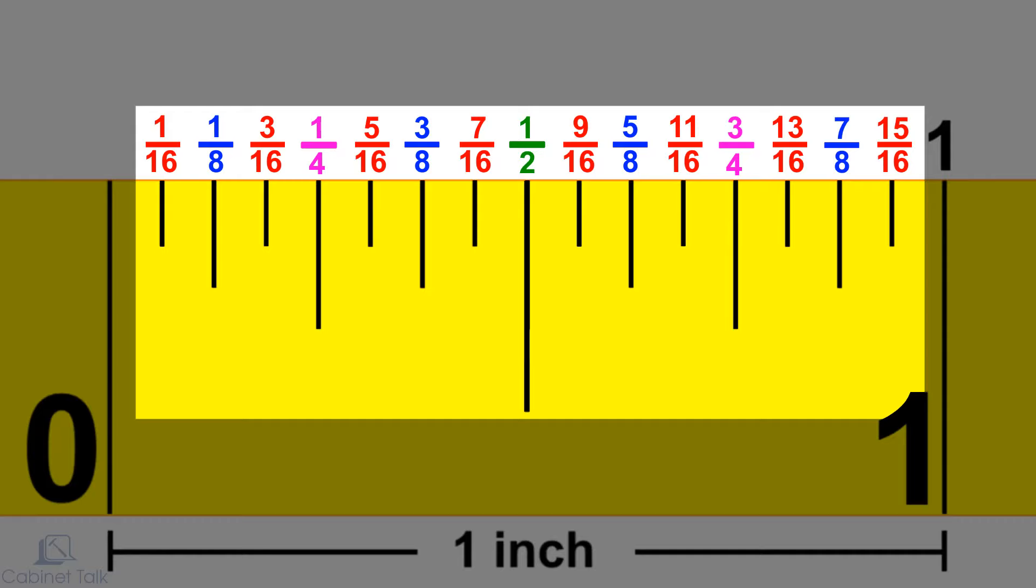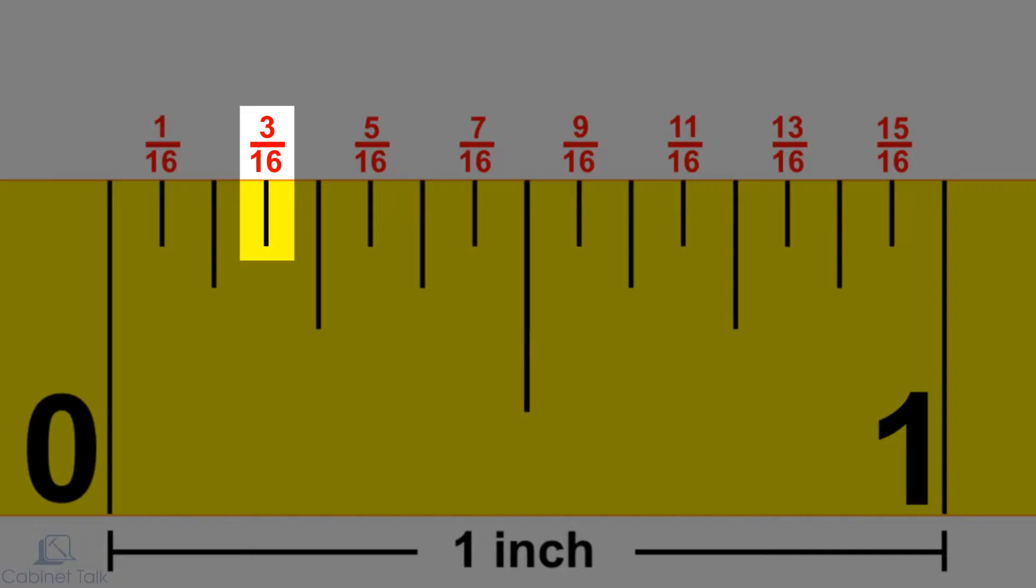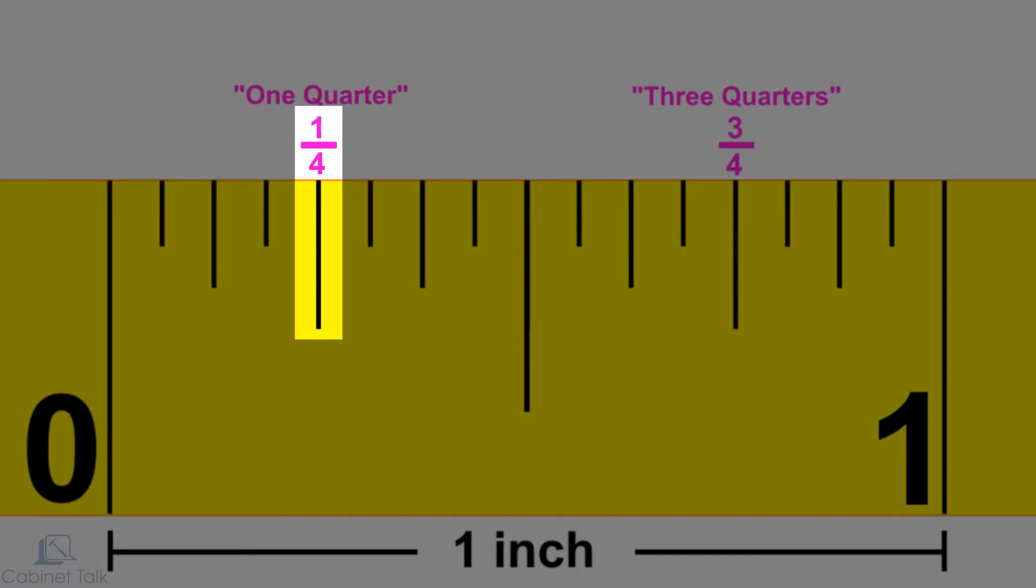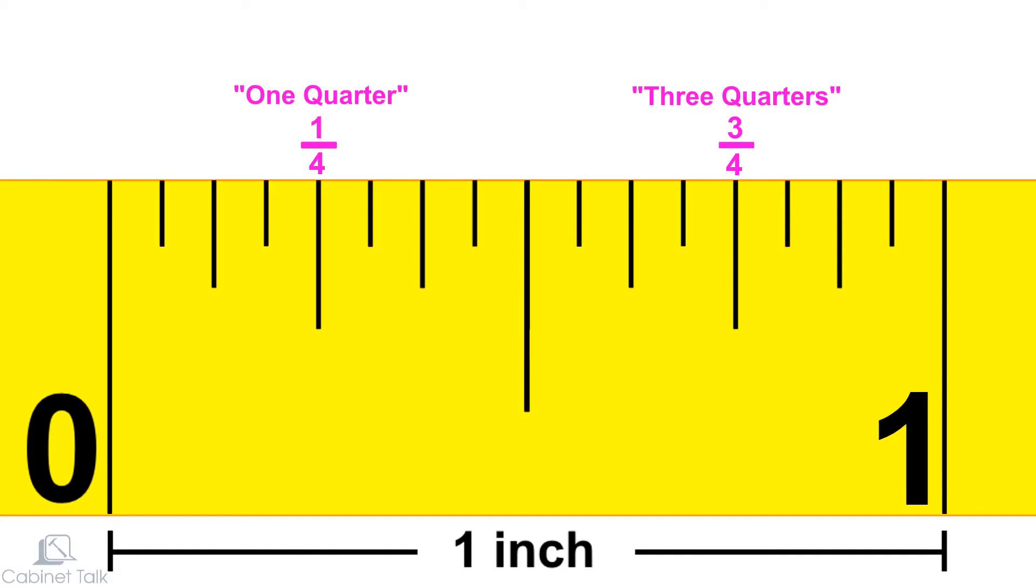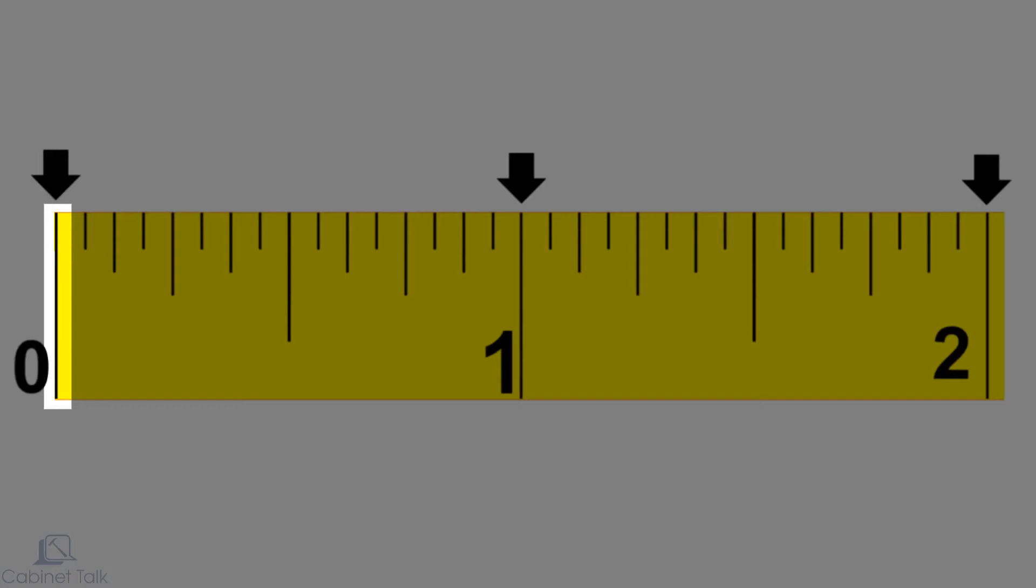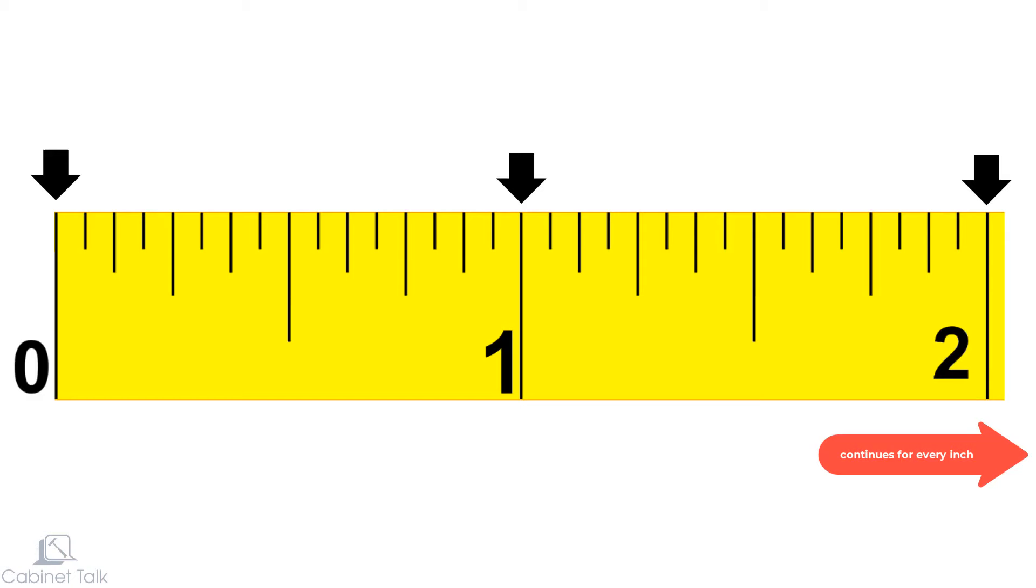If you look closely at the length of each mark, you'll see some helpful patterns. Notice that the sixteenth inch marks are the shortest, the eighth-inch marks are slightly longer, followed by the quarter-inch marks. The half-inch mark is the second longest, and the longest marks are used for every inch on the tape.